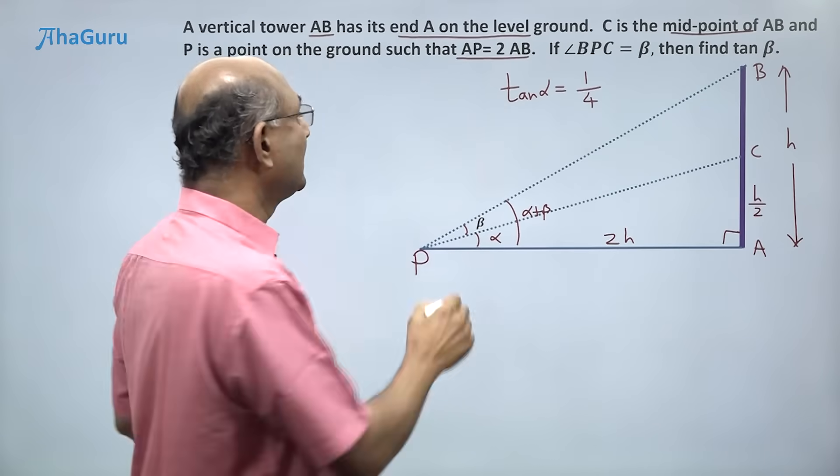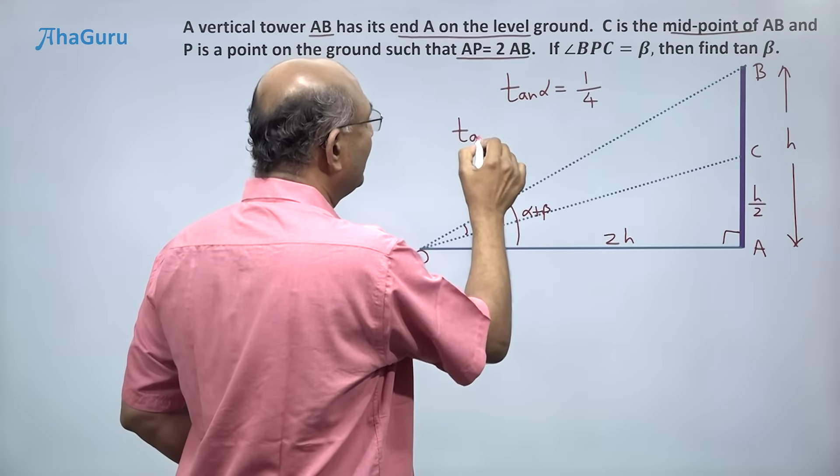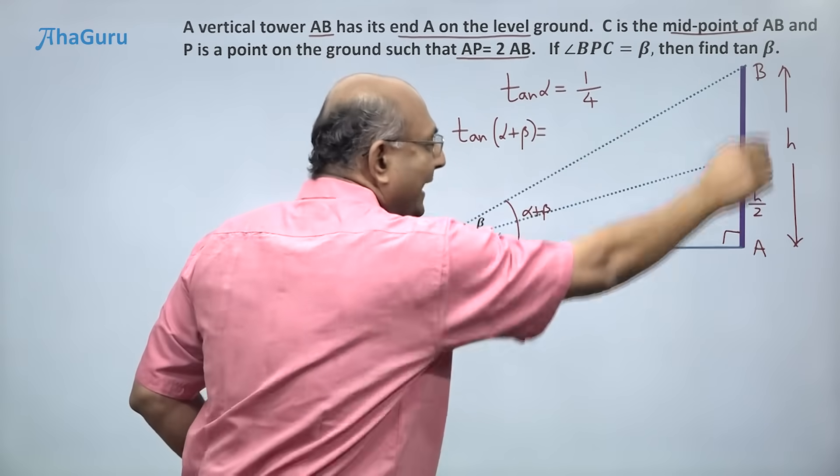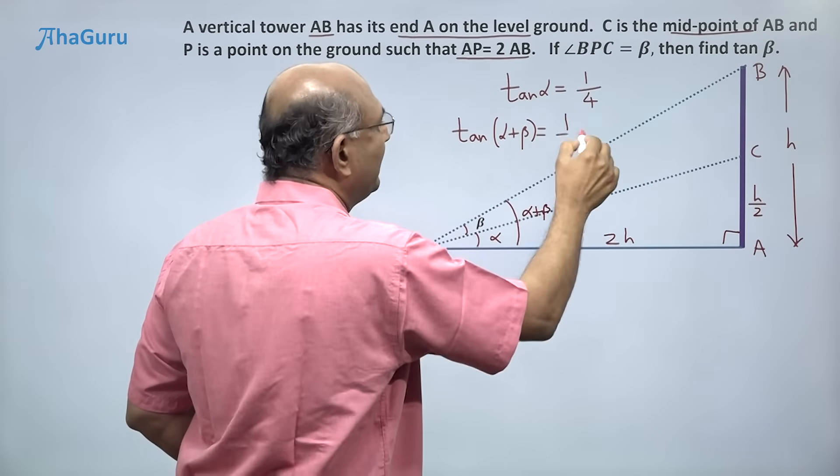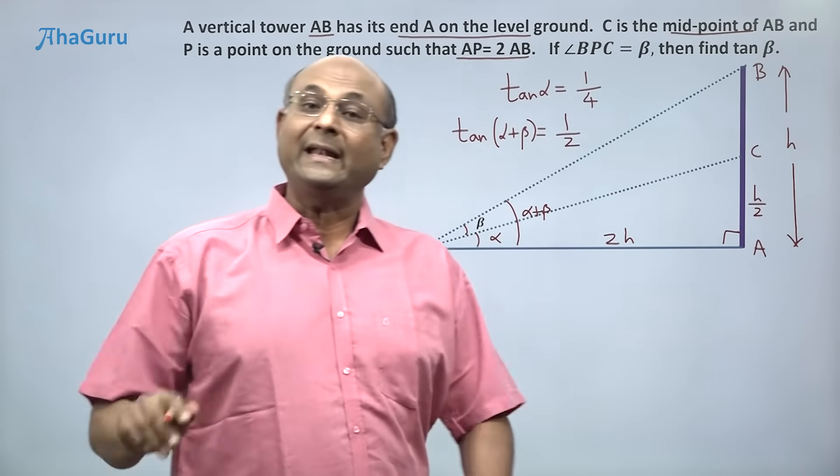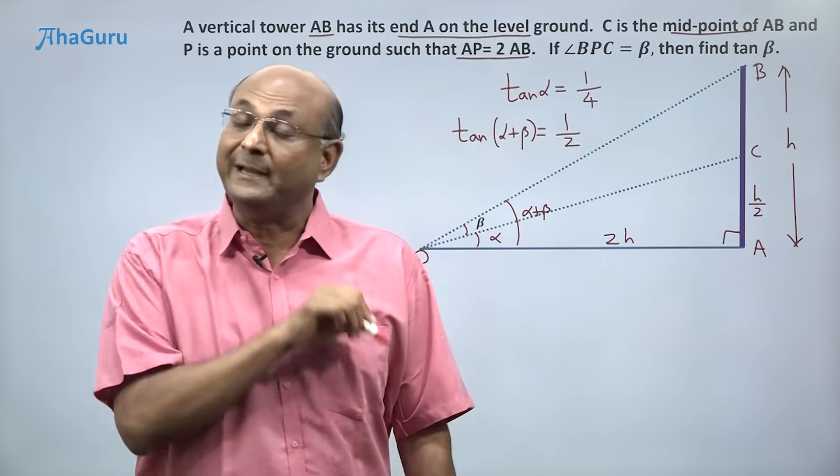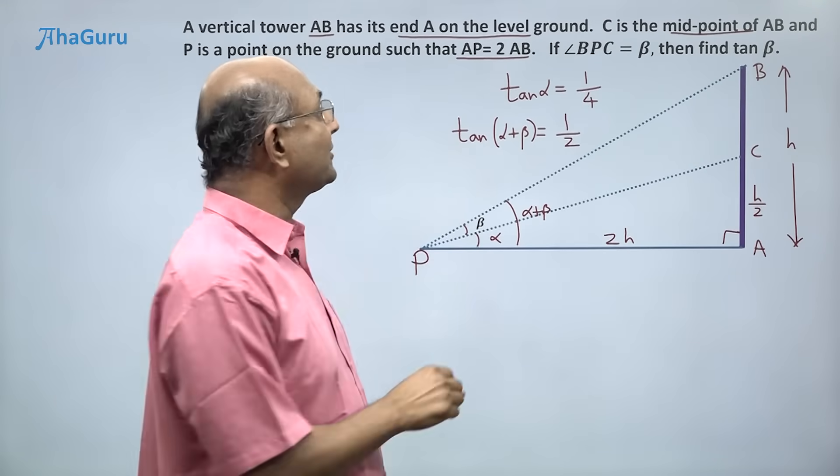So tan of (alpha + beta) is h by 2h, which is 1/2. So finding tan of alpha is easy, finding tan of (alpha + beta) is easy, but the question unfortunately is asking us to find tan of beta.